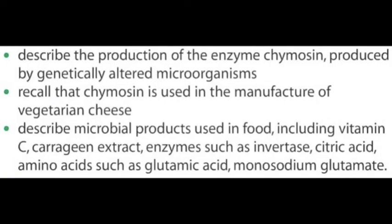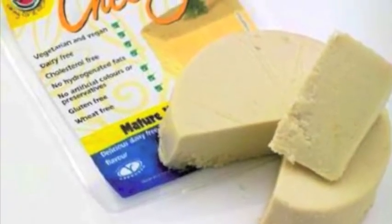Lesson number three: more on microorganisms and food. By the end of this lesson you should be able to describe the production of the enzyme chymosin produced by genetically altered microorganisms, recall that chymosin is used in the manufacture of vegetarian cheese, and describe microbial products used in food including vitamin C, carrageen extract, enzymes such as invertase, citric acid, amino acids such as glutamic acid, and monosodium glutamate.